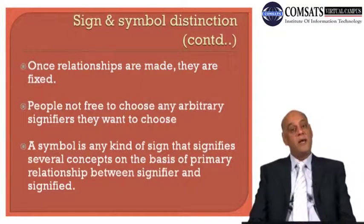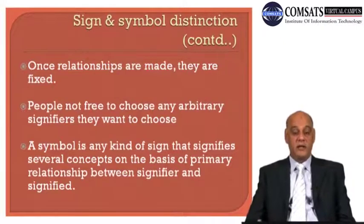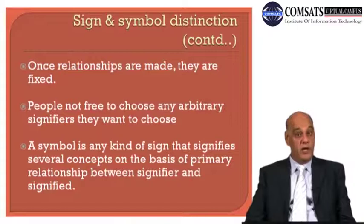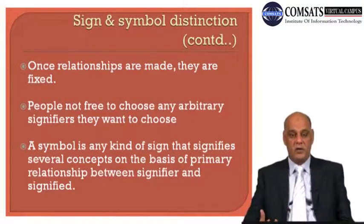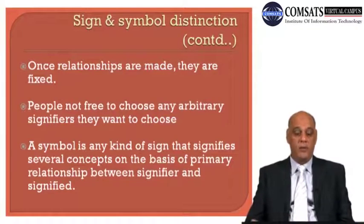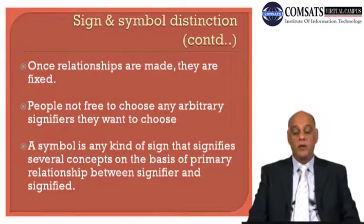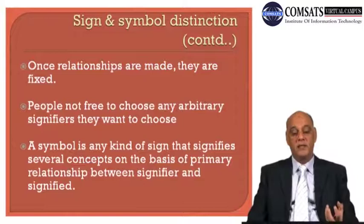What is a symbol? A symbol is any kind of sign that signifies several concepts on the basis of a primary relationship between signifier and signified. On the basis of this primary relationship between the signifier and signified, you have several concepts and several interpretations of one word. For example, the gesture of waving a hand or nodding your head — on the basis of that basic relationship you have several interpretations.